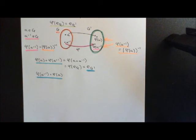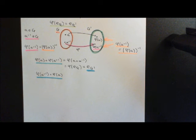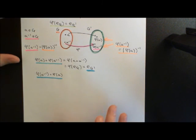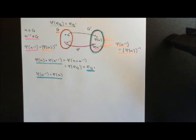Welcome back to this next video in which we are discussing group homomorphisms. We're in the process of discussing a few theorems regarding group homomorphisms, and the next one I want to show you is that the image of a homomorphism is always a subgroup of the codomain group. This theorem is going to allow us to reduce any non-surjective homomorphism into a surjective homomorphism.